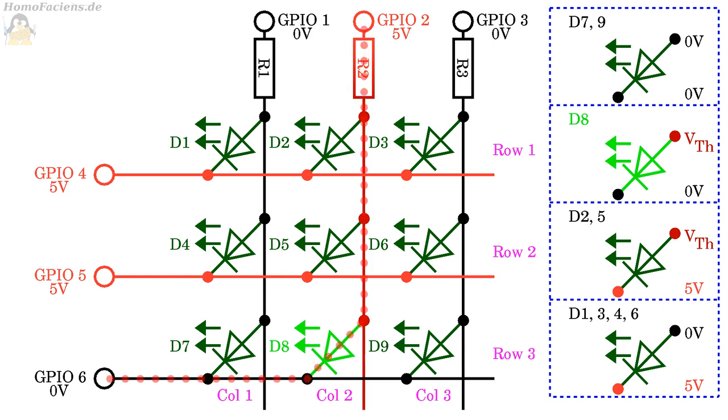Before switching on the next LED, the initial state should be restored, which means that GPIO 6 must be switched back to high and GPIO number 2 back to low signal. To turn on any LED, the GPIO of the corresponding column must first have a high signal, and immediately afterwards the GPIO of the corresponding row must be set to low signal. Column 3 set to high and row 3 set to low means that LED number 9 is switched on.